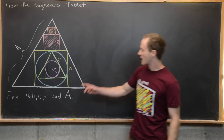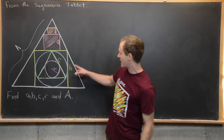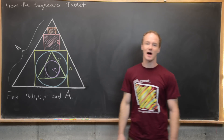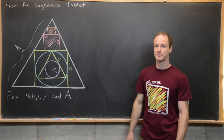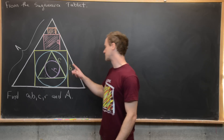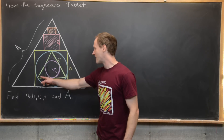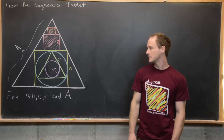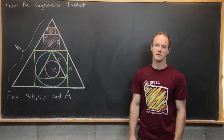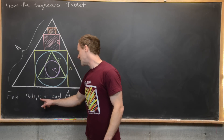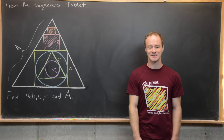So let's look at the problem. We've got a large equilateral triangle with side length capital A. Inscribed in that, we have a tower of three squares. The topmost square has side length one, the next one has side length a, and the next one has side length b. Inside the bottom square with side length b, we have an inscribed circle. Inside that circle, we have an equilateral triangle inscribed with side length C. And finally, inside that equilateral triangle, we have another circle inscribed with radius R. Our goal is to find a, b, C, R, and capital A — expressible as numbers since we've assumed the top square has side length one.